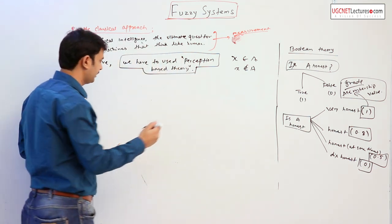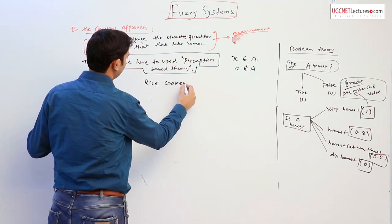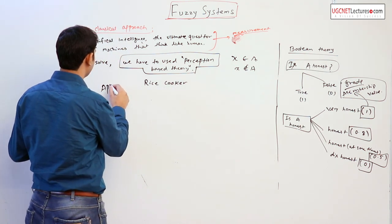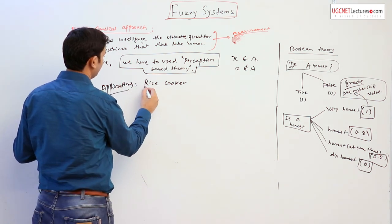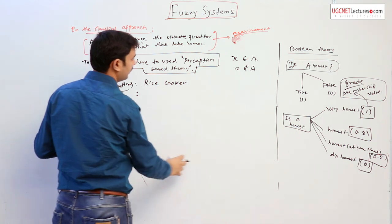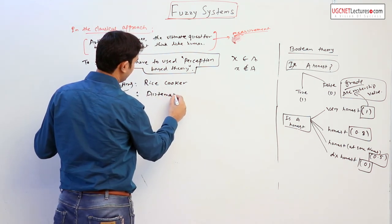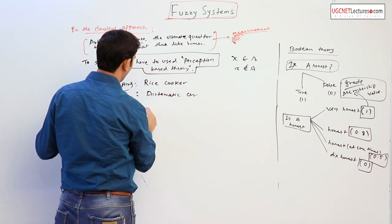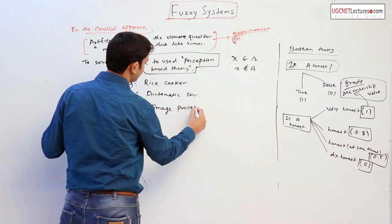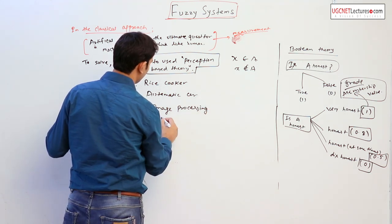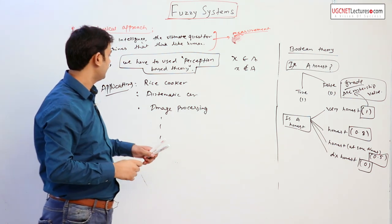For example, the rice cooker — these are applications of the fuzzy set — rice cooker, automatic car, and also in image processing. There are many applications of the fuzzy theory.